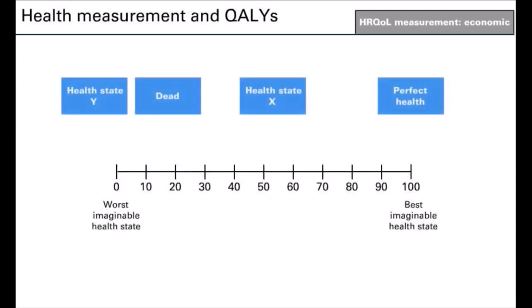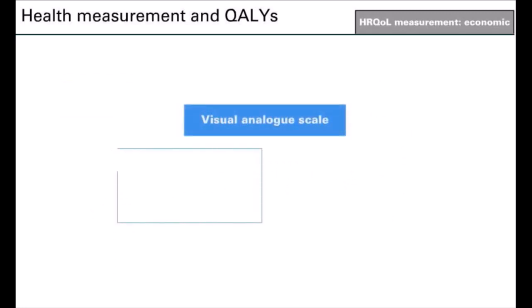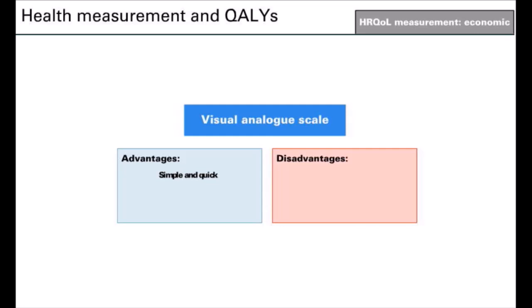In some cases respondents may not place the reference states at the ends of the scale — for example, they may view a health state as worse than dead, in which case the utility would be negative. The main advantage of visual analogue scales is that they are quick for respondents to undertake and relatively easy to explain and administer. However, respondents may find the scaling task difficult, and the technique is subject to end-of-scale bias, where respondents are reluctant to score health states close to 100 or 0, and spacing-out bias, where respondents tend to spread the outcomes over the scale regardless of the actual size of their preference.